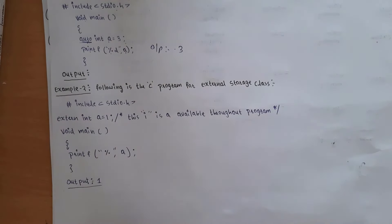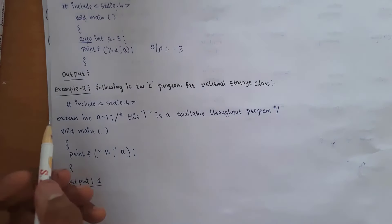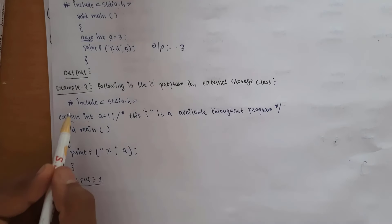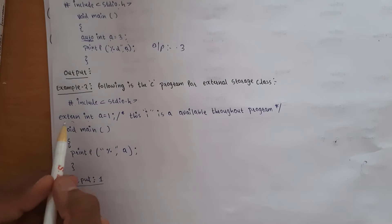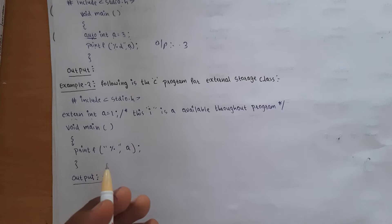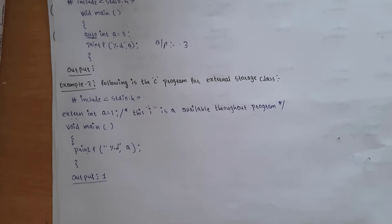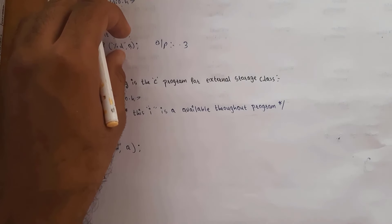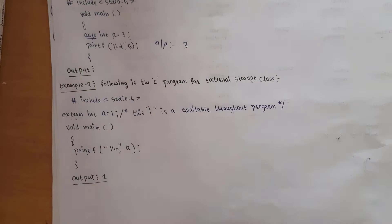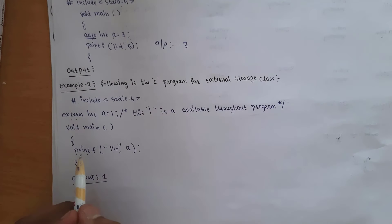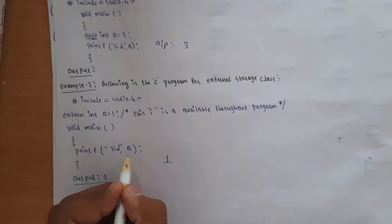For the extern storage class — the name itself says extern, meaning we need to declare the variable outside the main function. I written #include stdio.h, then extern int a equal to 1 outside the function, then void main with printf %d comma a inside. Unlike auto, static, and register which are declared inside main, extern must be declared outside the main function. The output will be 1 because the value of a is 1.